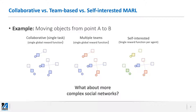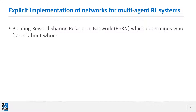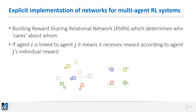But what about more complex social networks? We know that in the real world, social networks are more complicated than these typical scenarios. So our main goal in this work is to implement any arbitrary social network for a reinforcement learning society. Specifically, we build a reward sharing relational network which determines how agents care about each other — where if one agent cares about another, it receives reward according to that agent's individual reward, which is the self-interested reward based on its own performance.